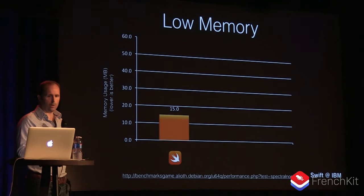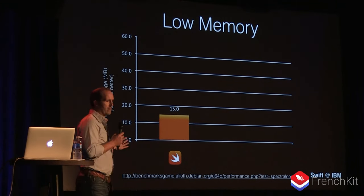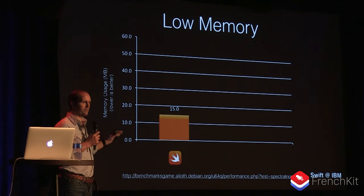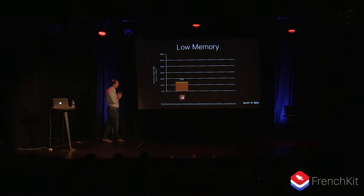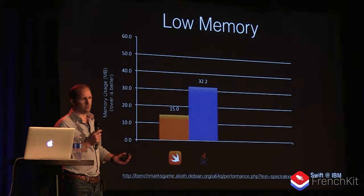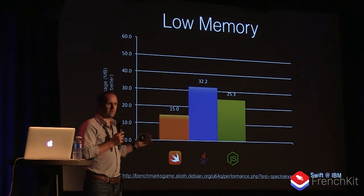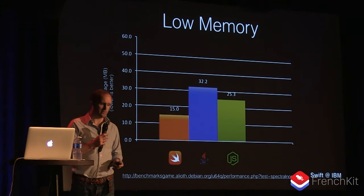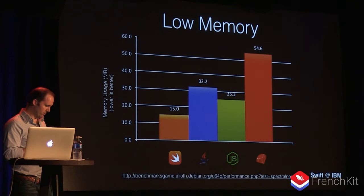Memory is another good data point. The same benchmarking group provides information on the amount of physical memory an application uses when running the test — the real amount of RAM being used. In the case of Swift, it uses 15 megabytes of RAM for that particular benchmark. Java uses around 30 megabytes — over twice the size — unsurprisingly, since Java has a whole runtime that must be started up and a garbage-collected heap. Node.js sits in the middle; it has a runtime and heap but isn't as large as Java. Ruby is fairly huge, making it a poor fit for either metric.